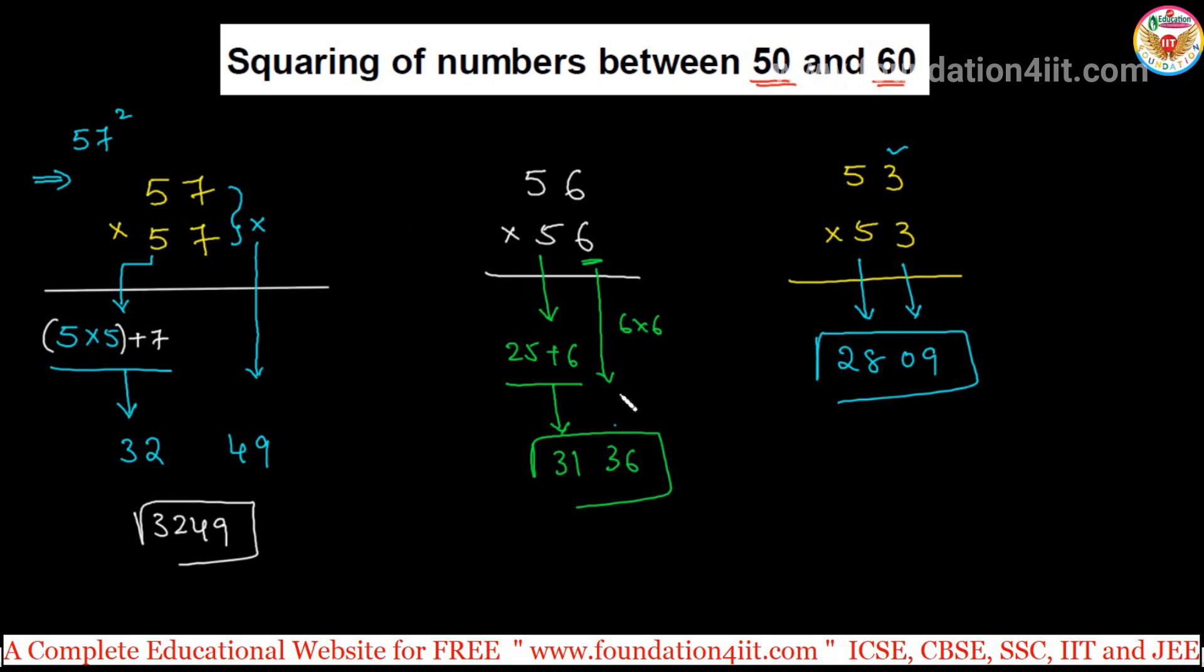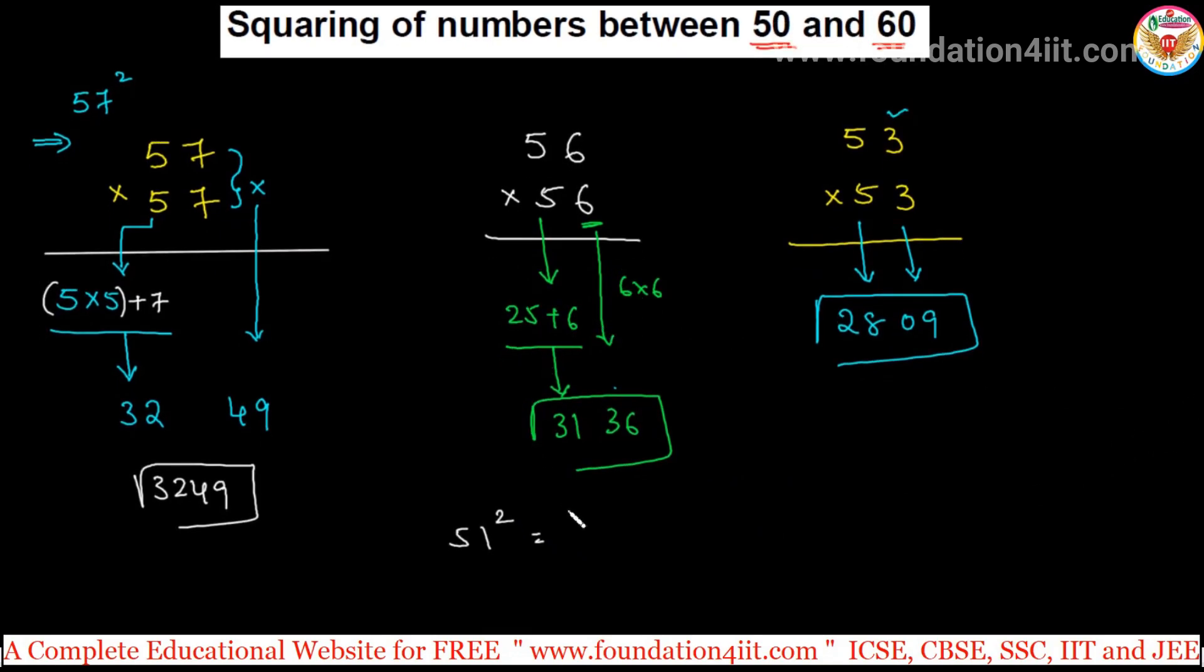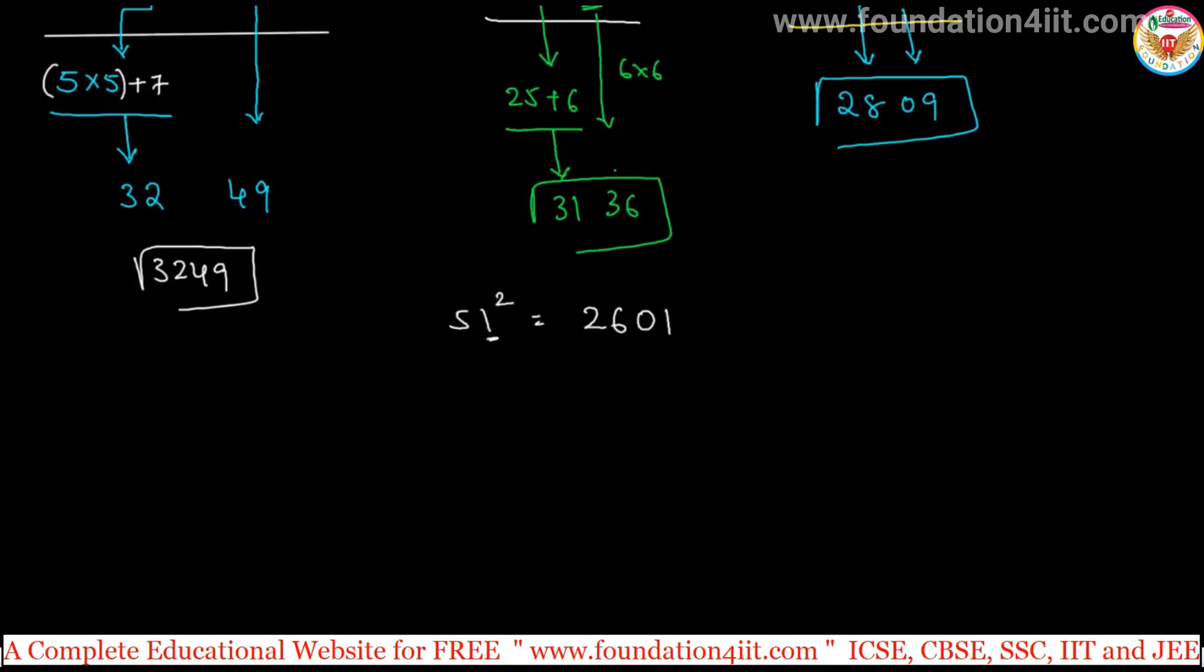Like other numbers, if you take 51 square, instead of taking many lines: 25 plus 1, simple, 26. Units place 1, so 01 - 1 square. You can do it directly.